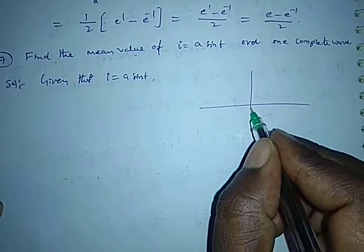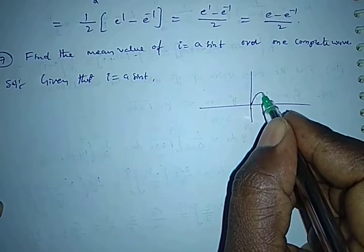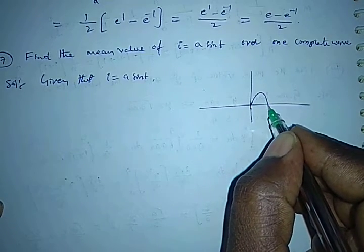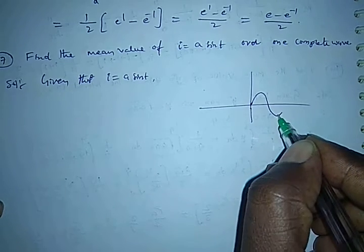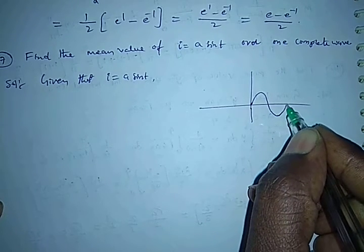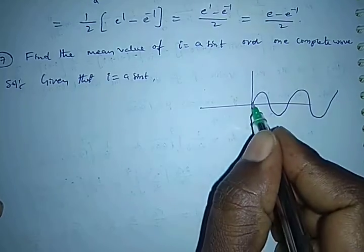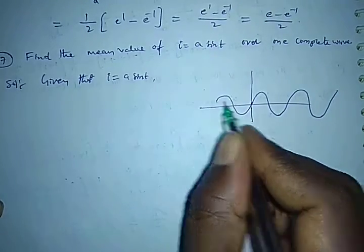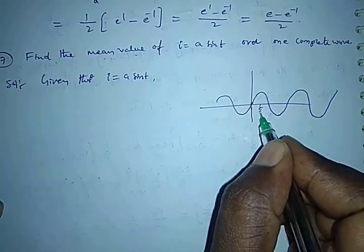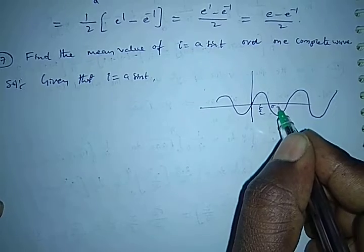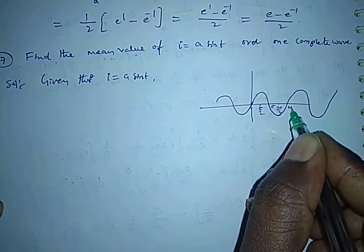What is the sine wave? sin(0) = 0, sin(π/2) = 1, sin(π) = 0, sin(3π/2) = -1, sin(2π) = 0, and it repeats. So the key values on the sine wave are at 0, π/2, π, 3π/2, and 2π.